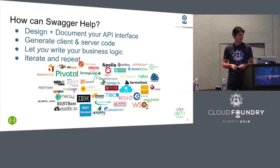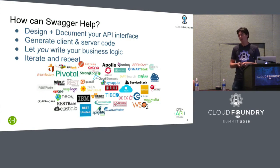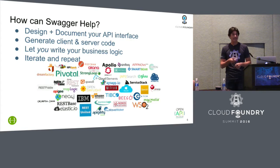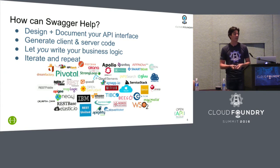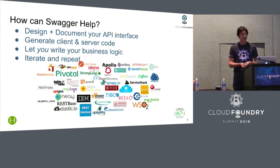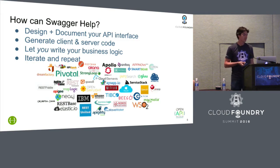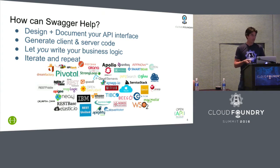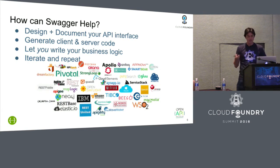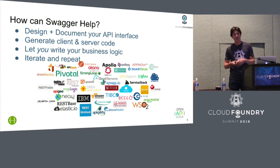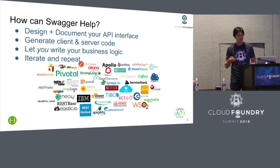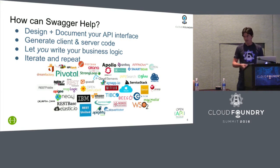So Swagger can help in a number of ways. There are different techniques for producing APIs. You can write code first. A lot of people are doing this thing called design first. And once you design an API, you can generate automatically with the right tooling clients and servers. And then your job is really to work on business logic, which is a lot more fun than writing plumbing.